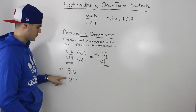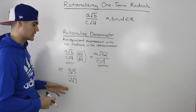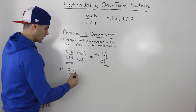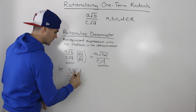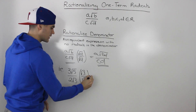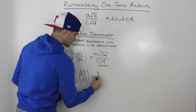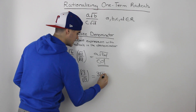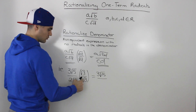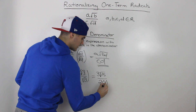For example, let's say we have 3 root 5 over 2 root 3 and we're asked to rationalize the denominator — we need to create an equivalent expression without the radical 3 in the denominator. What you do is take that whole expression and multiply it by root 3 over root 3, which is like multiplying by one. Then 3 root 5 times root 3 gives us 3 root 15, all over 2 root 3 times root 3, and the root 3s just change into a 3.